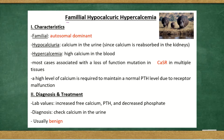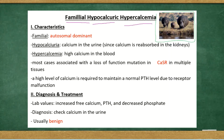In this scene we're going to talk about familial hypocalciuric hypercalcemia. The reason why I put a picture of a family of hippos over here is to help us remember 'family of hippos' for familial hypo. And in fact, they're high up on this screen to help us remember 'high' — so the family of hippos that are high, for familial hypocalciuric hypercalcemia.